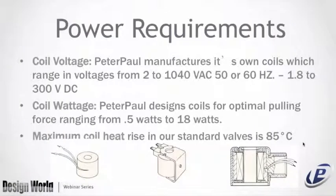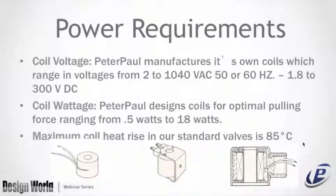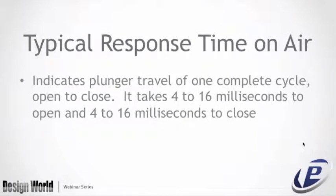Electrical characteristics — power requirements, coil voltage: Peter Paul manufactures its own coils ranging in voltages from 2 to 1,040 volts AC at 50 or 60 hertz, and 1.8 to 300 volts DC. Coil wattage ranges from 0.5 watts to 18 watts, with maximum coil heat rise of 85 degrees C. Typical response time on air: direct acting valves shift very quickly, taking 4 to 16 milliseconds to open and 4 to 16 milliseconds to close, enabling control schemes that require quick responses.